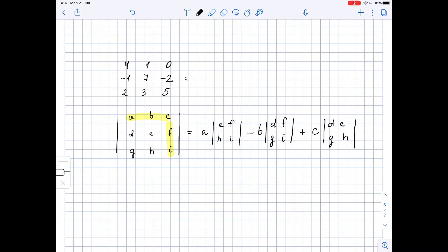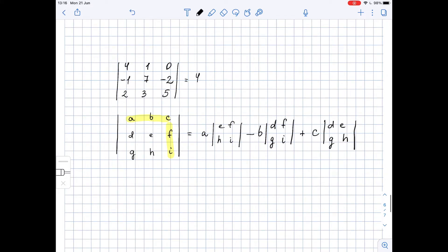So the determinant of the given matrix equals the first element of the first row which is 4 times. Now we ignore these two rows and we multiply 4 by matrix 7, negative 2, 3, 5.